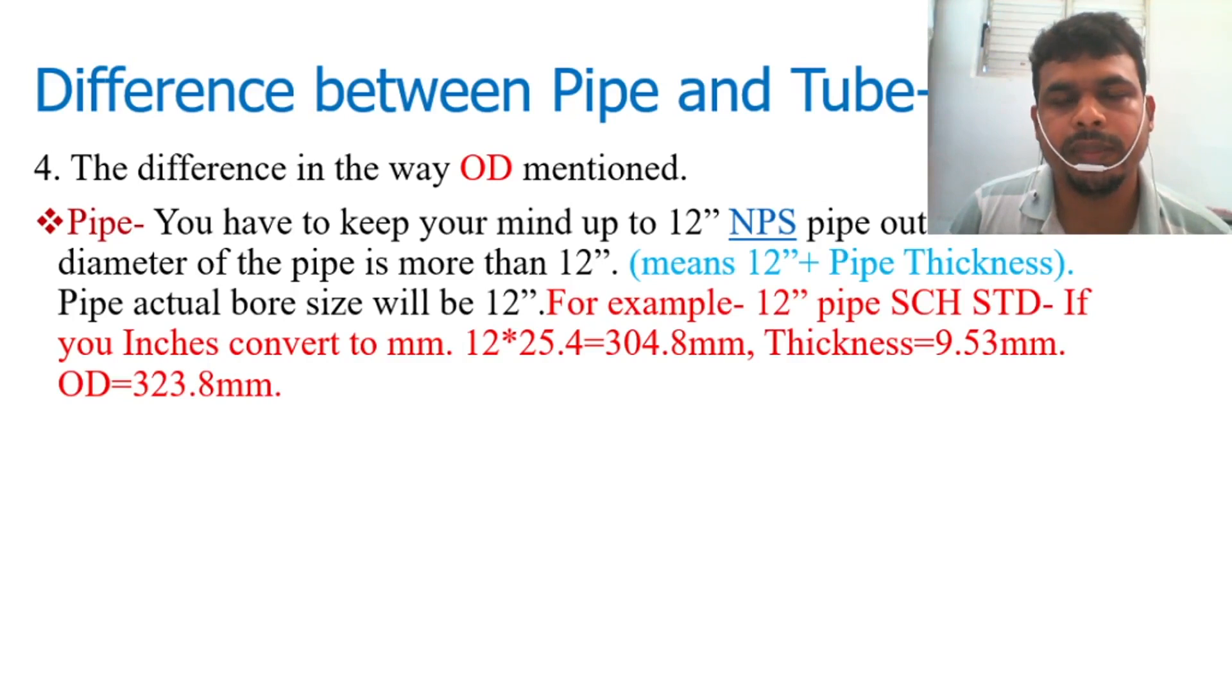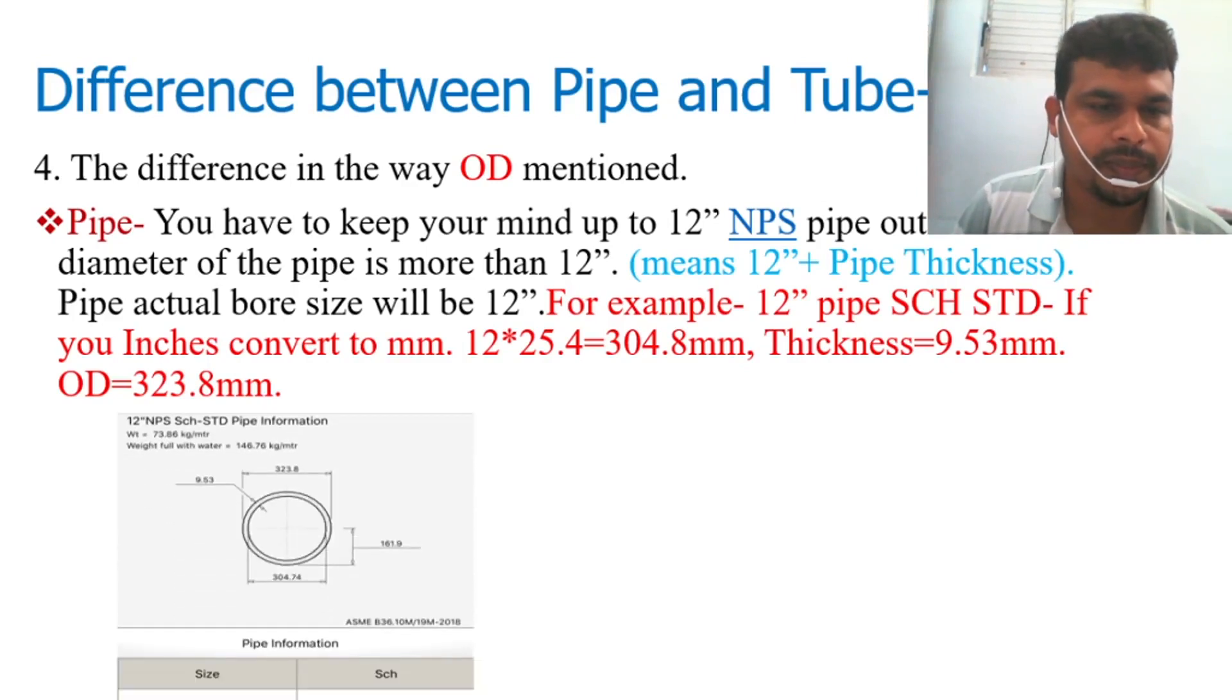For pipe: you have to keep in mind up to 12 inches NPS, the outside diameter of the pipe is more than 12 inches, meaning 12 inches plus pipe thickness. Pipe actual bore size will be 12 inches. For example, 12 inches pipe is schedule STD. If you convert inches to mm, then 12 times 25.4 equals 304.8 mm is the NPS. Thickness for 12 inches schedule STD is 9.53 mm. So OD will be if you calculate 12 inches plus pipe thickness, then you will see the OD is 323.8 mm.